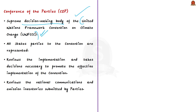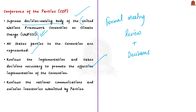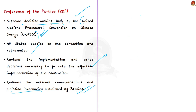All states that are parties to this convention are represented at the COP. At this formal meeting, parties review implementation of the convention and take decisions to promote its effective implementation. The COP reviews national communications and emission inventories submitted by the parties, assesses the effects of measures taken, and evaluates progress toward the ultimate objective of the convention. In this manner, COP accelerates action towards the goals of the Paris Agreement.